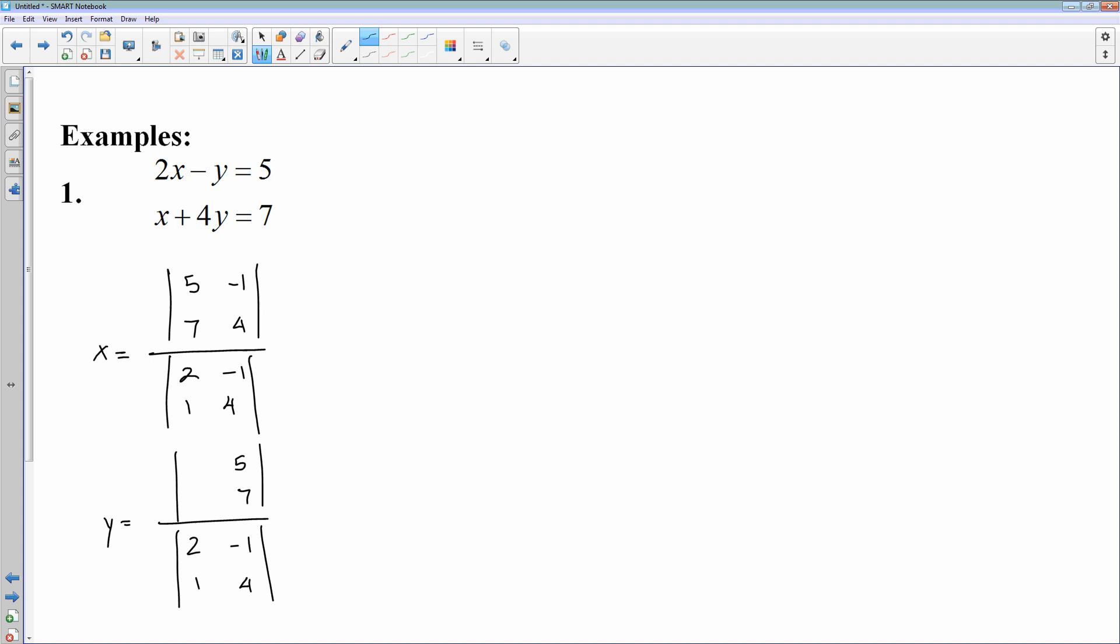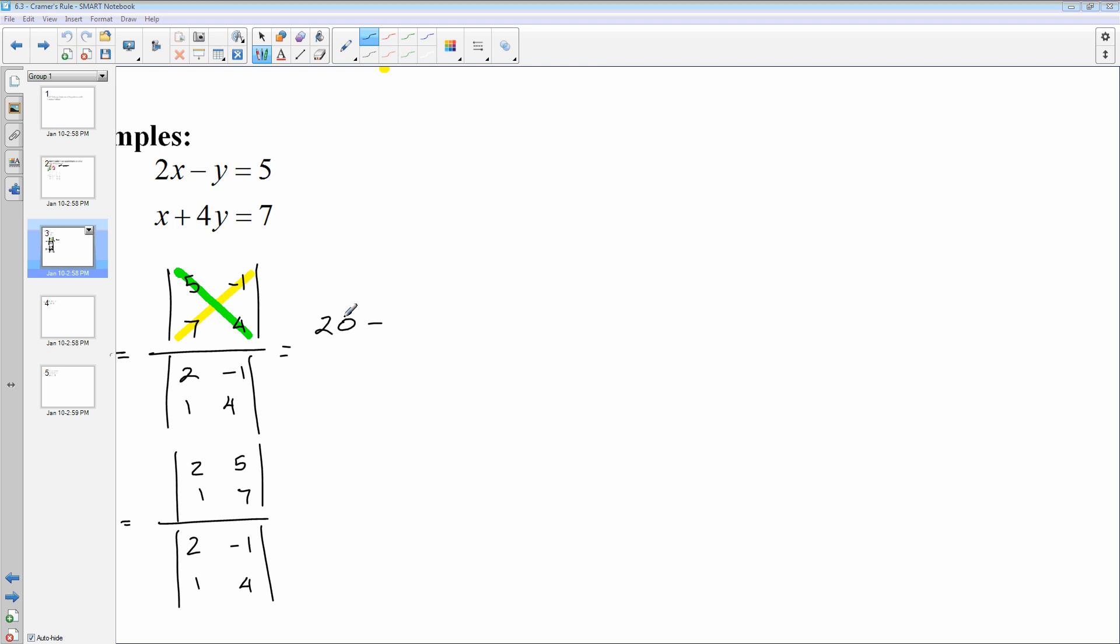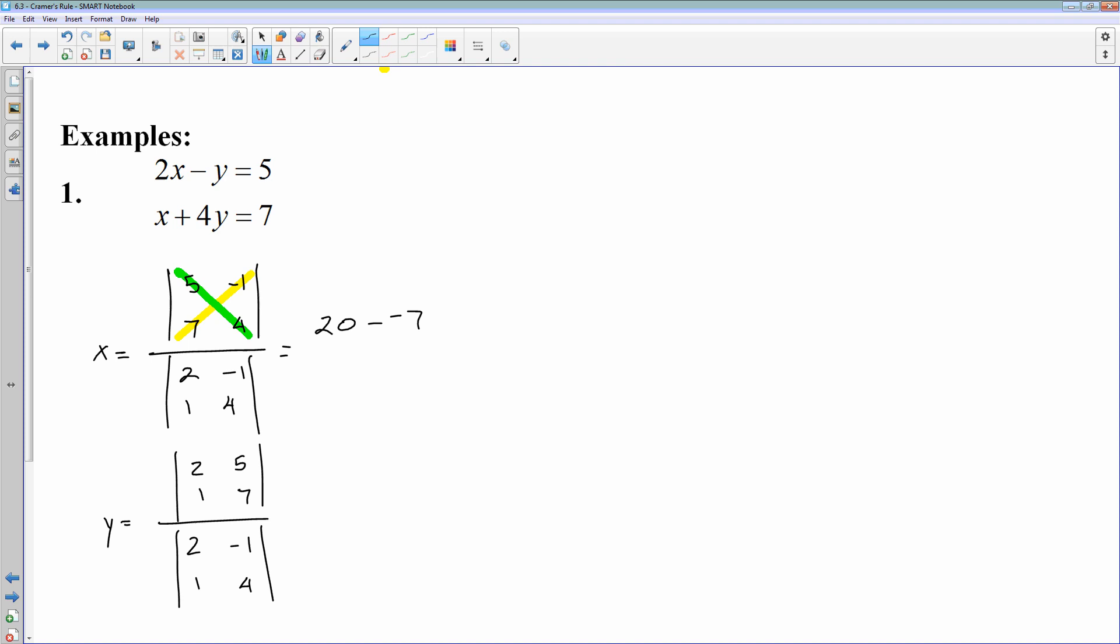And then we'll do these determinants. So let's do that real quick. If you remember determinants, you do downhill minus uphill. So I'll go downhill, which is 5 times 4, that's 20, minus uphill, 7 times negative 1 is negative 7. Divided by 2 times 4 is 8, minus 1 times negative 1 is negative 1. And then we work that out. 20 minus negative 7, that's 20 plus 7. 8 minus negative 1 is 9. 27 divided by 9 is 3. So that's what X equals.